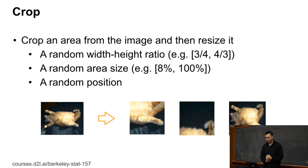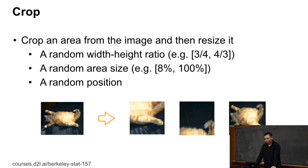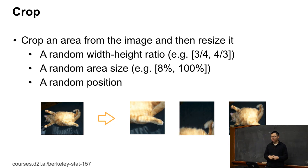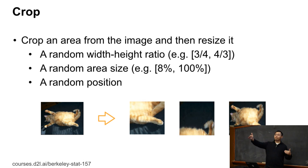Another technique is crop. Given an image, you crop an area from it. You can randomly pick a width-to-height ratio, for example between 3/4 and 4/3. Then randomly pick an area size, say between 8% and 100% of the original image, and randomly choose a position. After cropping, resize to a common shape. Cropping is very useful for normalizing different image sizes to the same size.